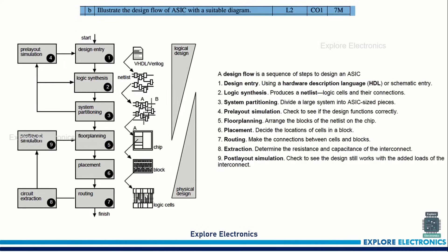The second question is the design flow of ASICs. There are nine steps starting from design entry, then synthesis, then partitioning, then pre-layout simulation. You need to explain each stage's functionality. After pre-layout simulation, if there is any error we need to redesign; otherwise, you do floor planning, then placement, routing, circuit extraction, and post-layout simulation. If there is any mismatch, we need to redo floor planning. Since it is for seven marks, three to four marks will be for the flow diagram and the remaining for explanation of each block.